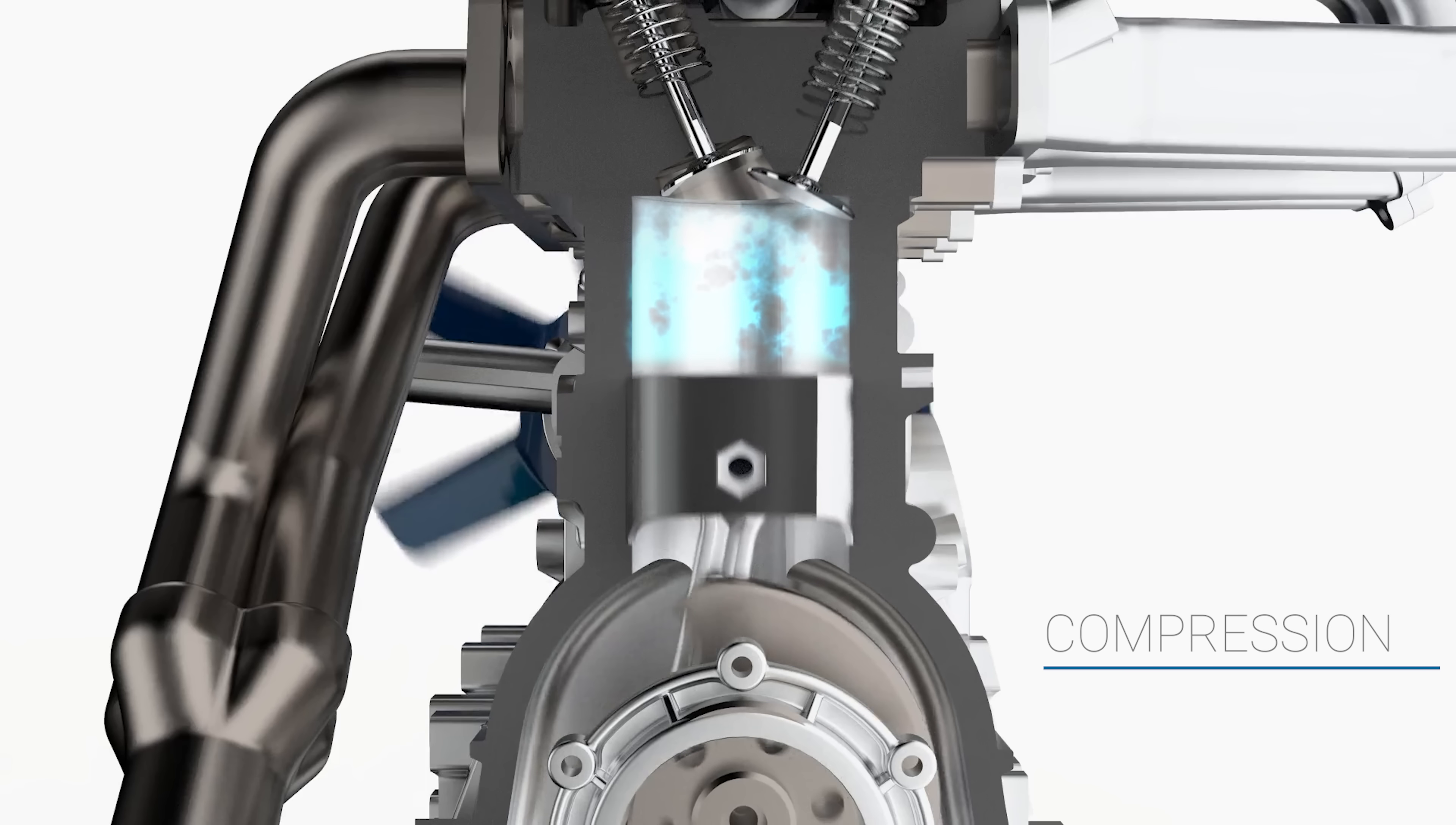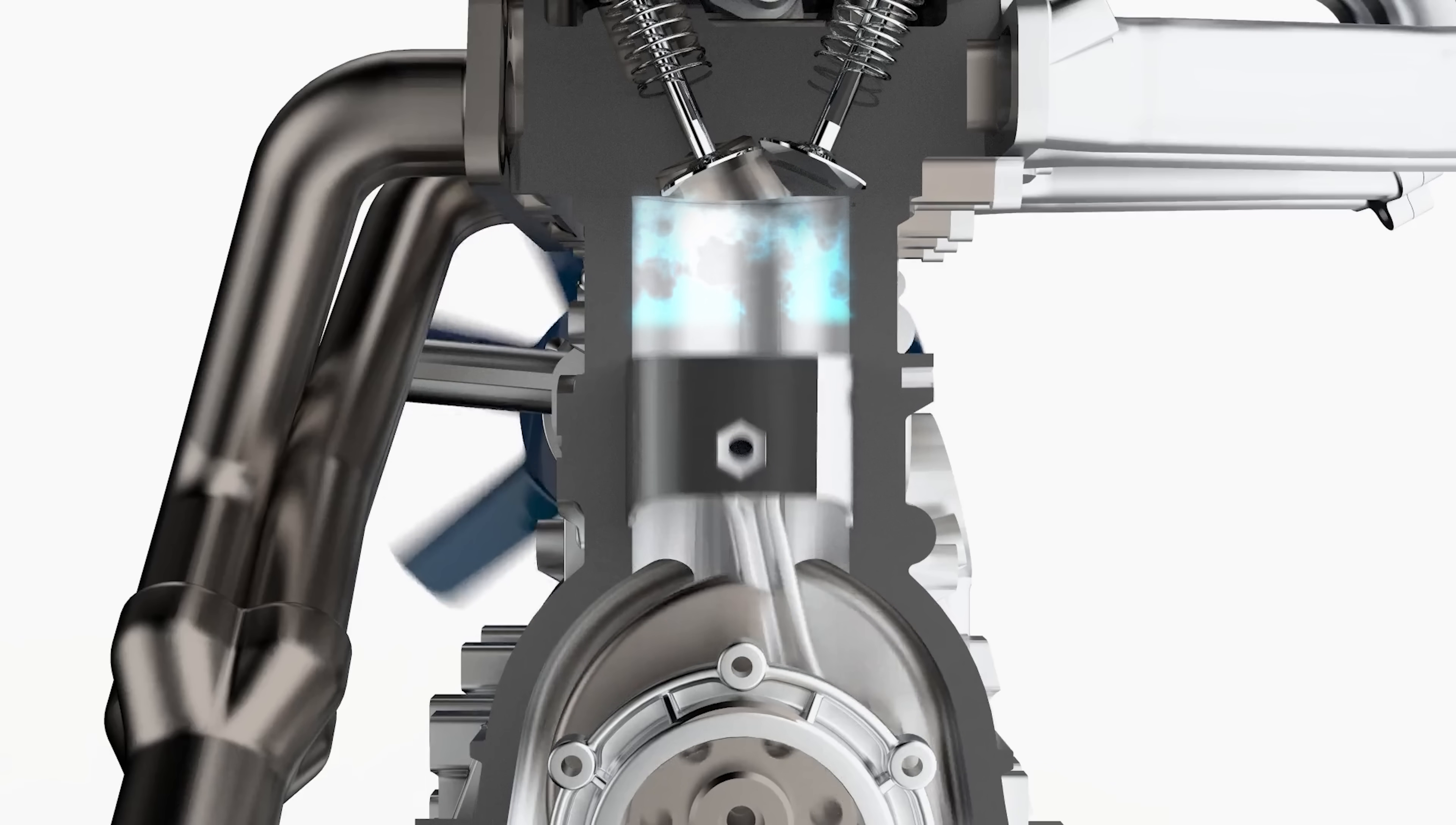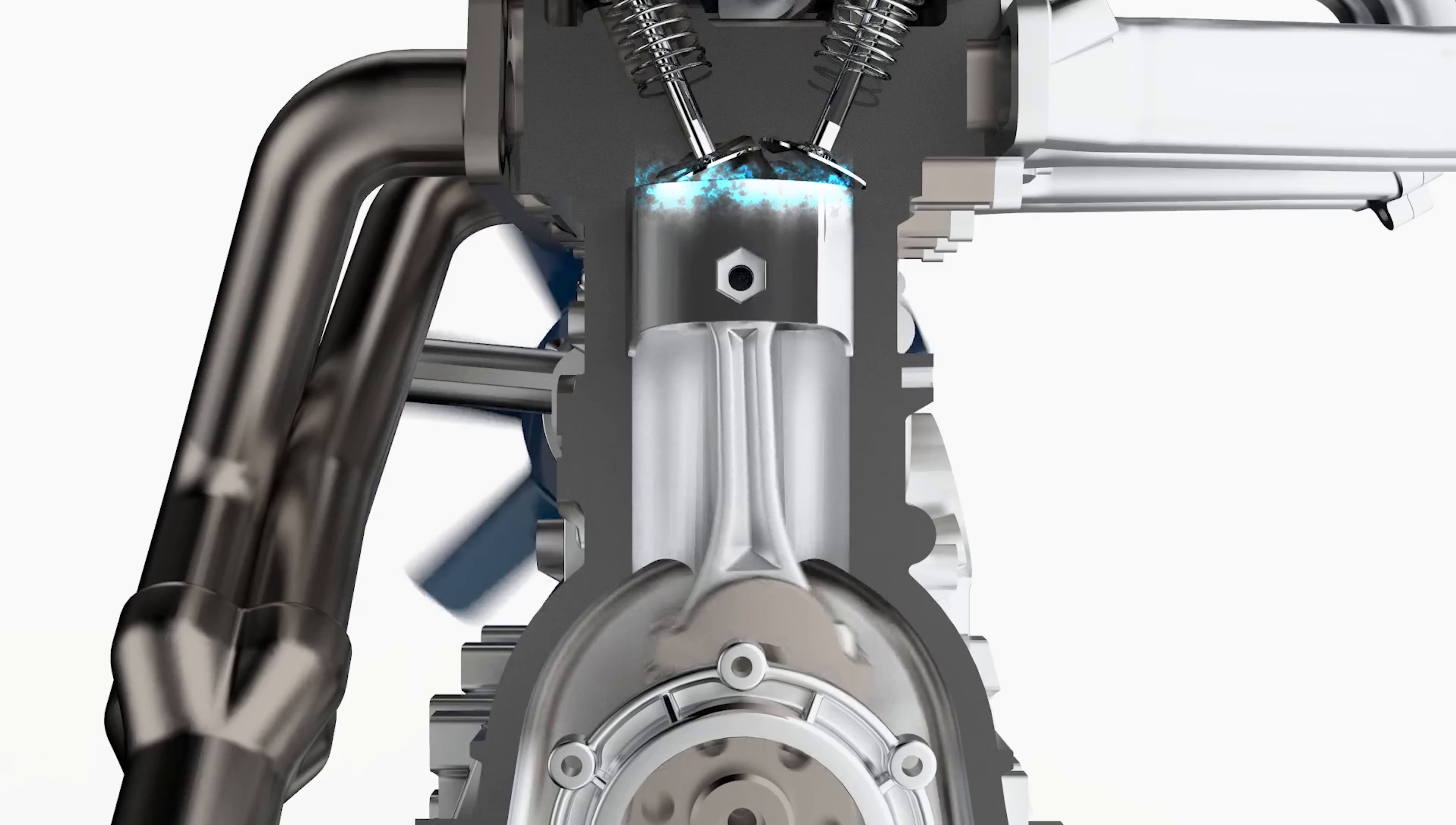Second stroke: compression. During this stage, both the intake and exhaust valves are closed and the piston moves up the chamber to the top. This causes the compression of the fuel-air mixture, which decreases ten times its volume.